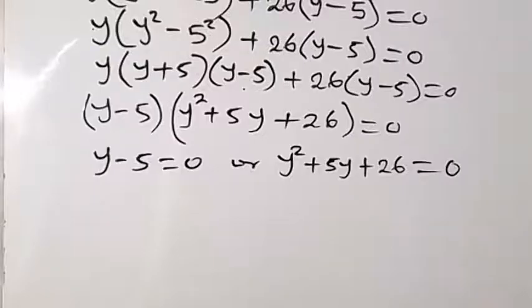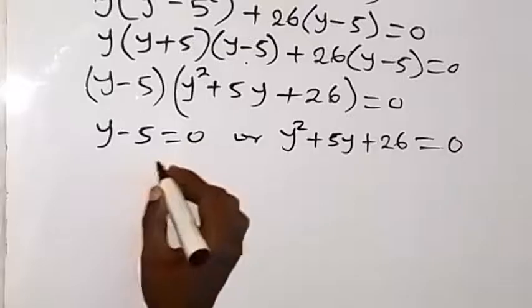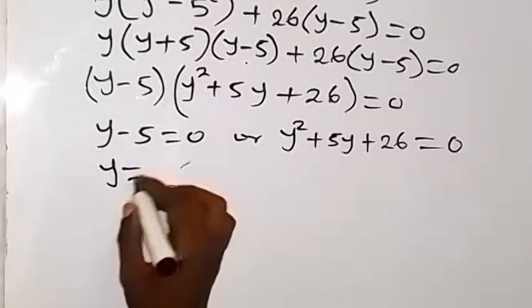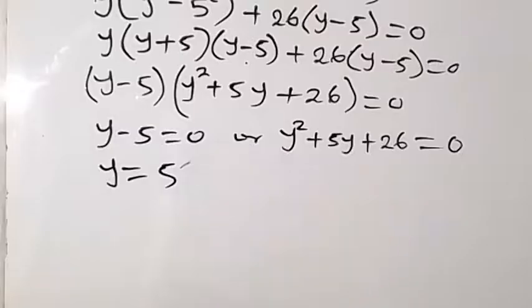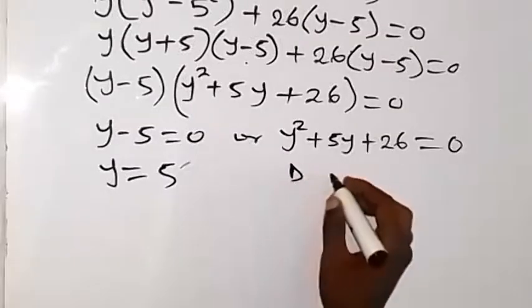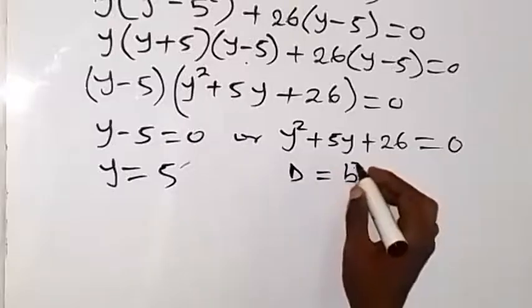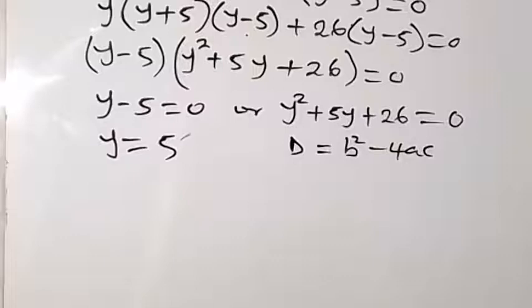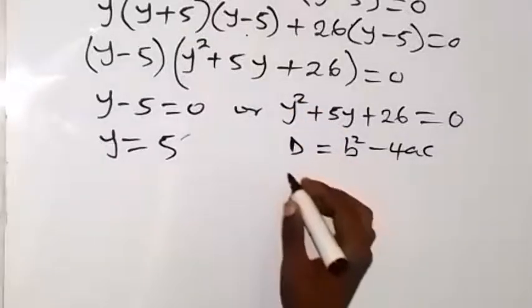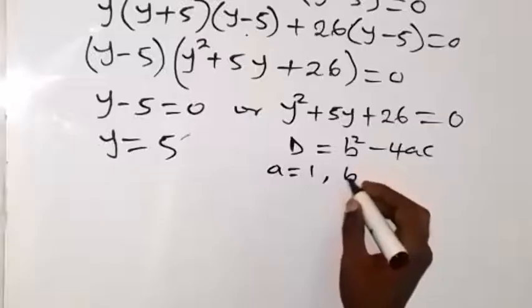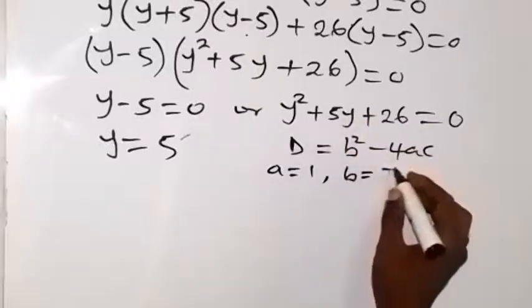Then from there, we can see that on this side, where we solve for y, minus 5 comes here, become plus. So y equals to 5 here. And here we have a quadratic equation. Let's test using the discriminant. Discriminant equals to b squared minus 4ac. In this case, our a is the coefficient of y squared, which is a equals to 1. And our b here is coefficient of y, which is 5.